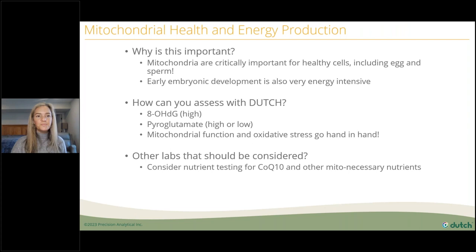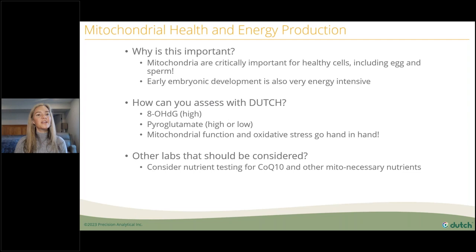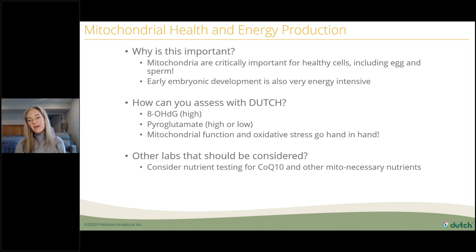Mitochondrial health and energy production are critically important for healthy cells — including egg and sperm — and early embryonic development is very energy intensive. Interestingly, the testes and ovaries have the highest concentration of mitochondria in the body, even more than the heart muscle. You can assess mitochondrial health on the Dutch Test by looking at 8-OH-DG and pyroglutamate. Since mitochondrial function and oxidative stress go hand in hand, you might also consider nutrient testing for CoQ10 and other nutrients necessary for good mitochondrial function.